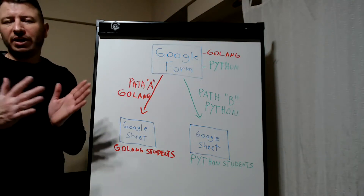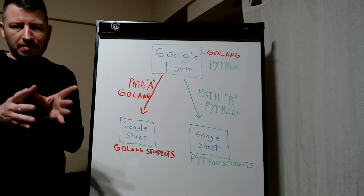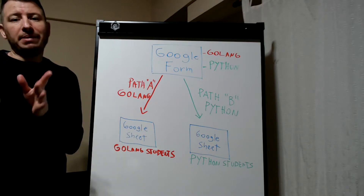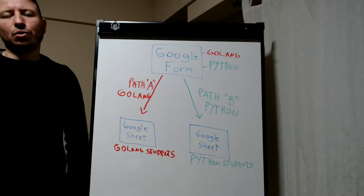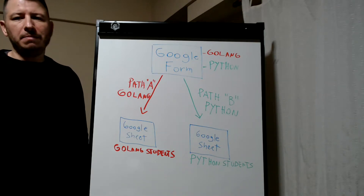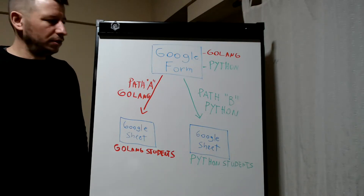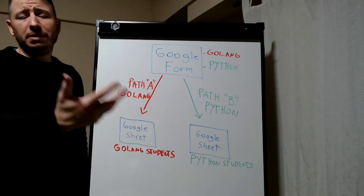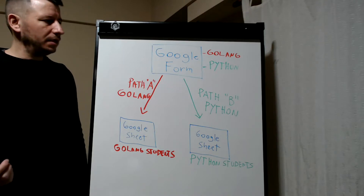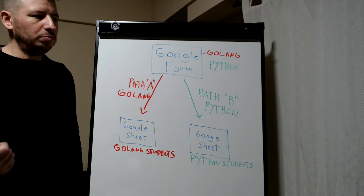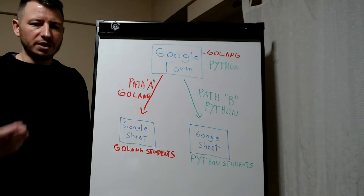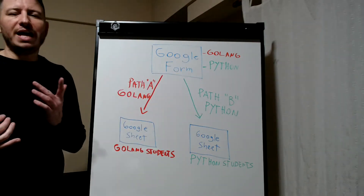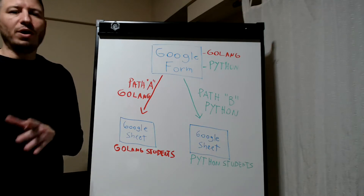So if in the trigger app condition A happens, then execute something; or if condition B happens, then execute something else. In this video we are going to implement a Zap using Google Forms as the trigger app, where we provide a survey to a set of developers asking them to pick a language they want to learn — Golang or Python — and based on that selection we'll implement two different paths to handle each condition.